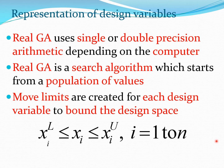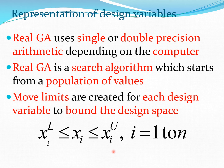Depending on the computer you are using, you can use single precision or double precision math to represent the design variables. Real coded GA is also a search method, so you start with a population of values. To create this population you define move limits — a lower and upper bound for each design variable — which bound the design space. For example, a lower limit of 0 and a higher limit of 10.